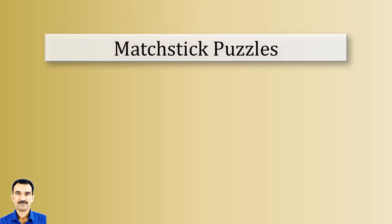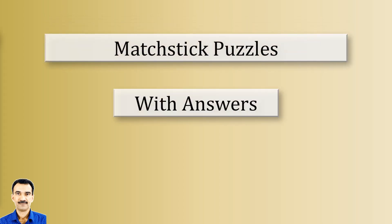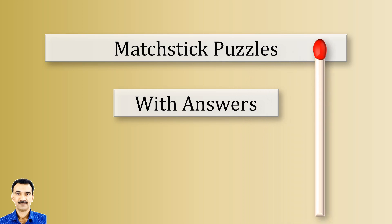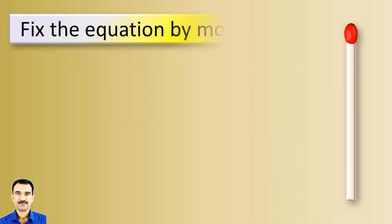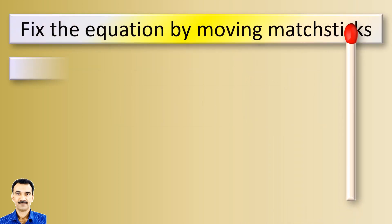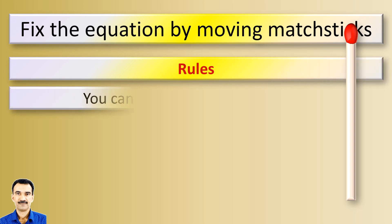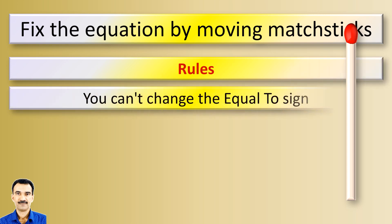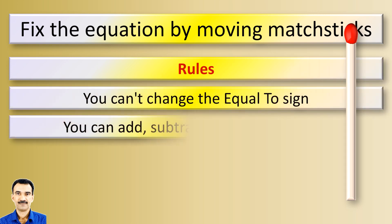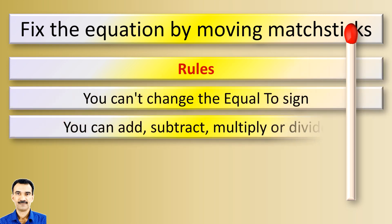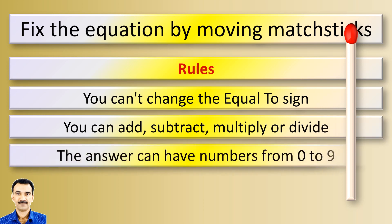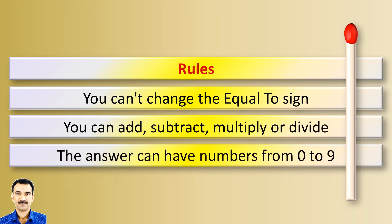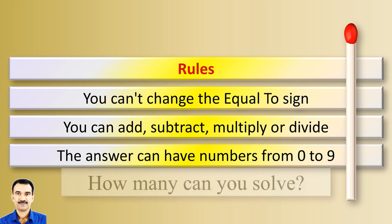Welcome to another video of Matchstick Puzzles with Answers. Please keep the rules in mind. You cannot change the equal to sign. You can add, subtract, multiply or divide. The answers can have numbers from 0 to 9. How many puzzles can you solve?